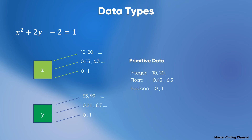The second data type you may encounter, which you have learned about in object-oriented programming, involves how to create objects. So the second data type is user-defined, which is the object. So in summary, we have two categories of data types: primitive data types — integer, float, boolean, character, and so on — and user-defined types, which are objects.